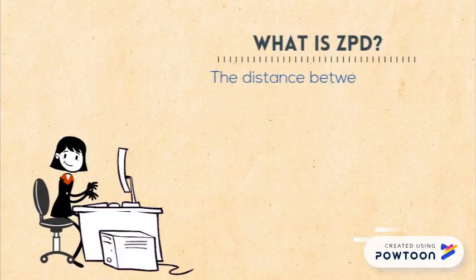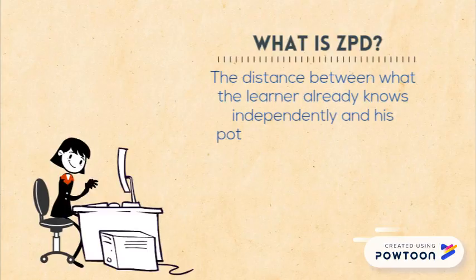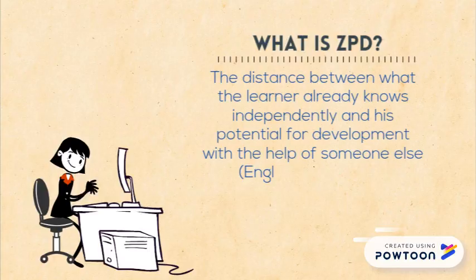The Zone of Proximal Development, or ZPD. ZPD is the distance between what the learner already knows independently and his potential for development with the help of someone else.